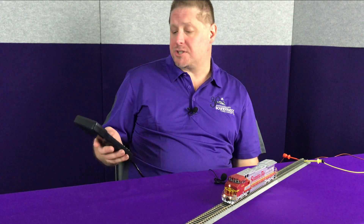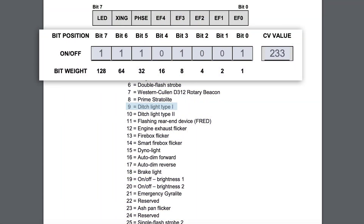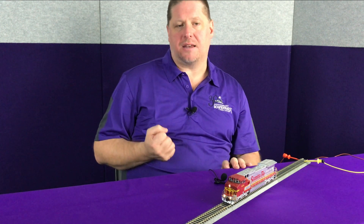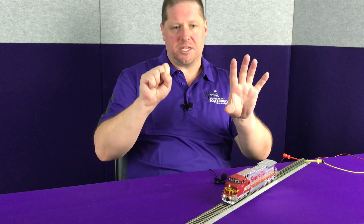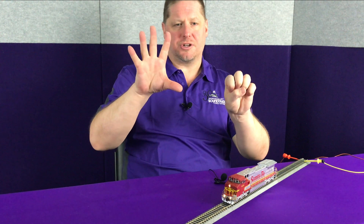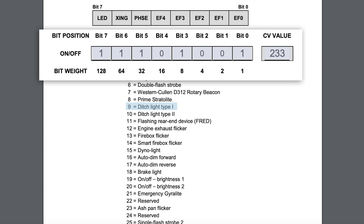Now we need to set up the other side, which is the FX4 lighting effect. All the other parameters are going to stay the same: Type 1 ditch light, grade crossing logic, and LED. But here's where we tell the decoder this is different — we're going to add the value 32, which determines phase offset. By default, phase A is on, and that's the one we've already set. When we enable the phase offset, we enable phase B, which means when one light is on, the other will be off, and then when it turns off, the other turns on — 180 degrees out of phase. So we add 32 to our value of 201 and set a final value of 233.